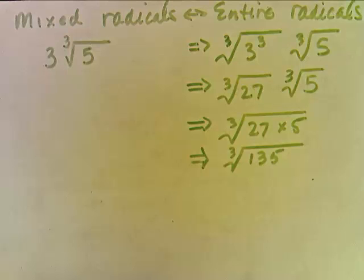27 times 5 is 135. In summary then, 3 times the cube root of 5 is the same as the cube root of 135.